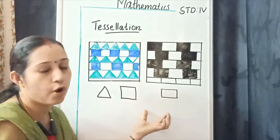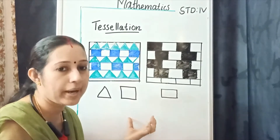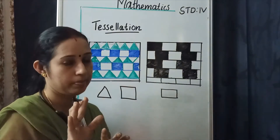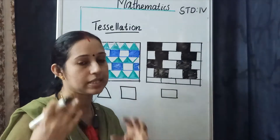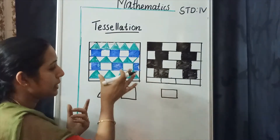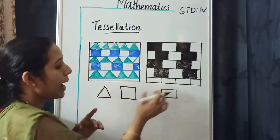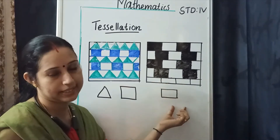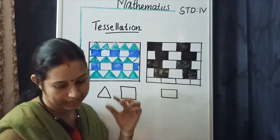In some tessellations there is only one basic shape, but some tessellations are formed using more than two basic shapes. In the first example, the two basic shapes are triangle and square. In the second example, the basic shape is rectangle.